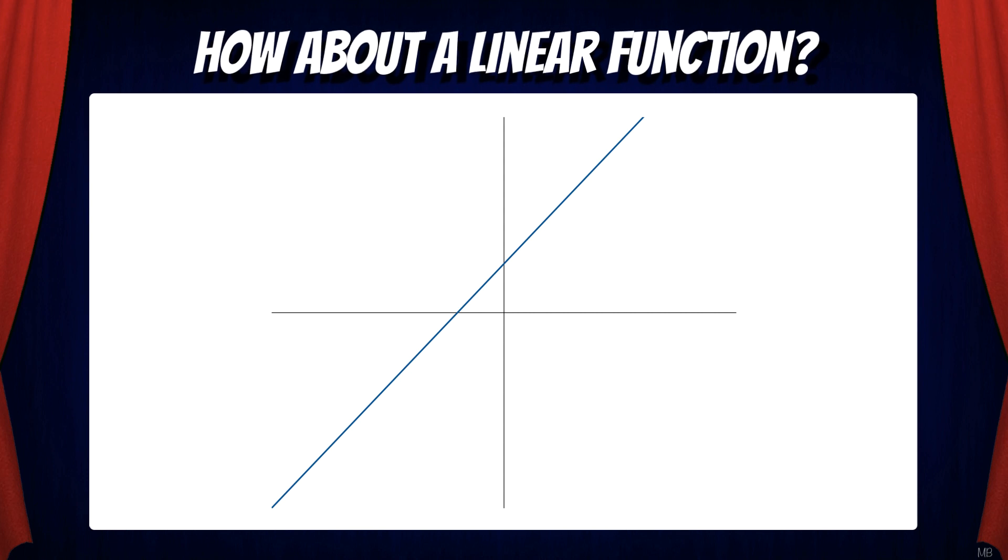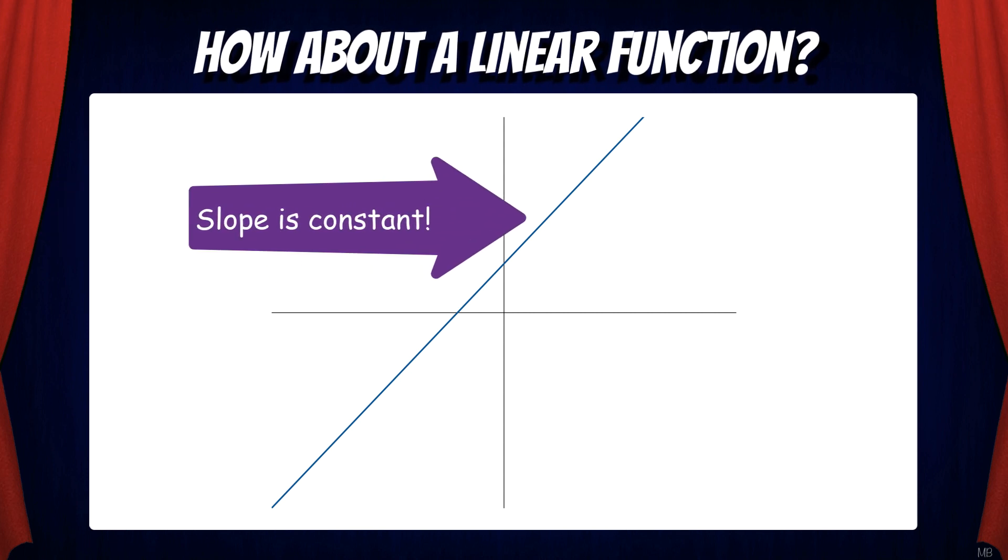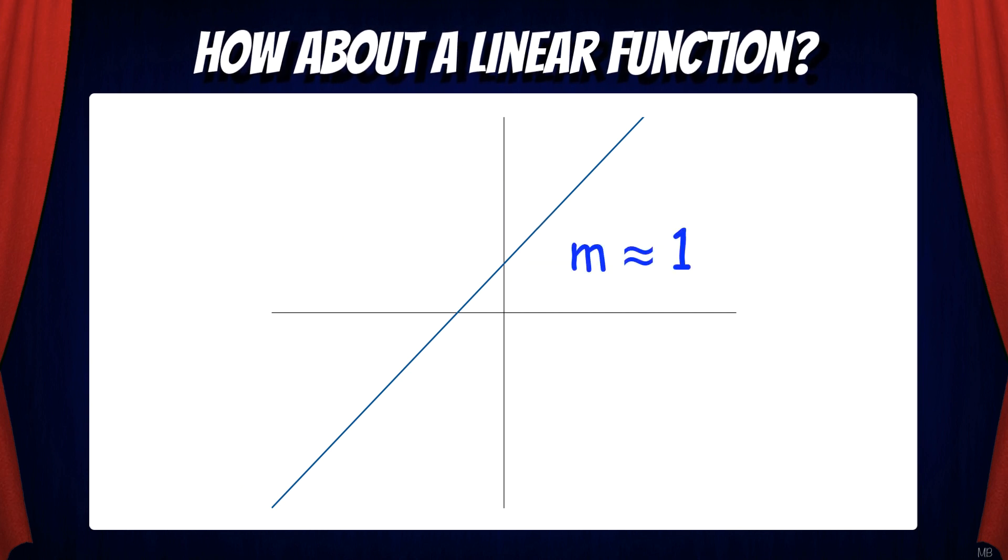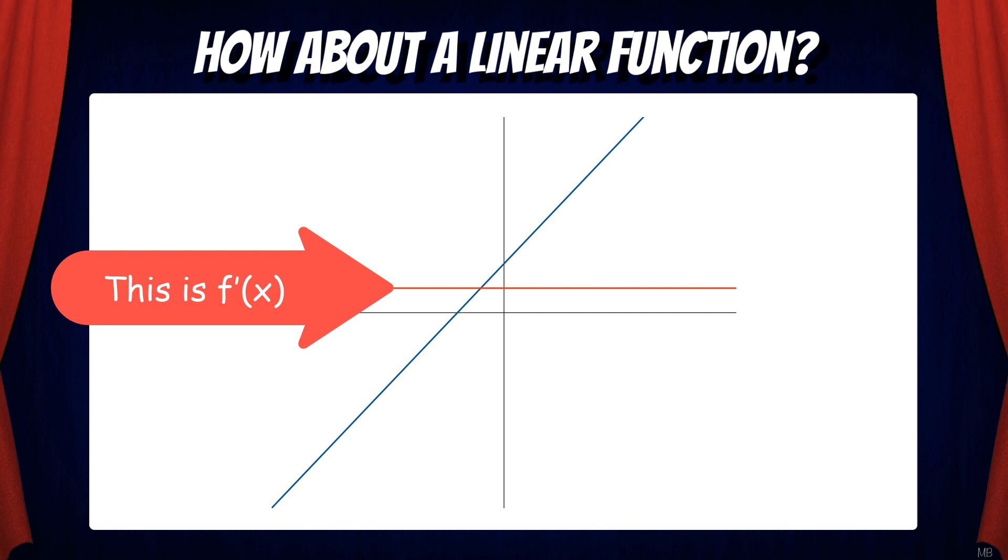Here we have a linear function f. Since the slope is always constant, that means the derivative will always be constant too. Here it looks like the slope is approximately equal to 1. That means the derivative function will equal 1. And here's f prime shown in red.